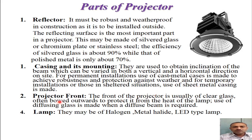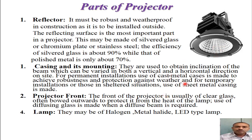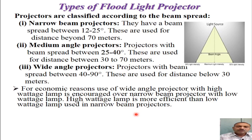The projector front is provided with a clear glass that is bowed outwards to protect it from the heat produced by the lamp during operation. A diffuse glass can also be used to produce a diffuse beam if required. The lamp, which is the element that emits light, can be of halogen, metal halide, or LED type. These are the important parts of the projector.